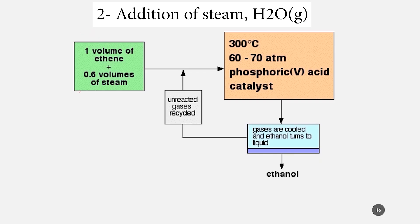The second reaction of alkenes is the addition of steam. The reaction of steam (water vapor) and gaseous alkene in the presence of concentrated phosphoric acid as a catalyst, at a temperature of around 300 to 330 degrees centigrade and pressure between 60 and 70 atmospheres, results in the formation of ethanol. However, this process of converting ethene into ethanol is not commonly used in industry; instead, ethanol is obtained from the fermentation of glucose.